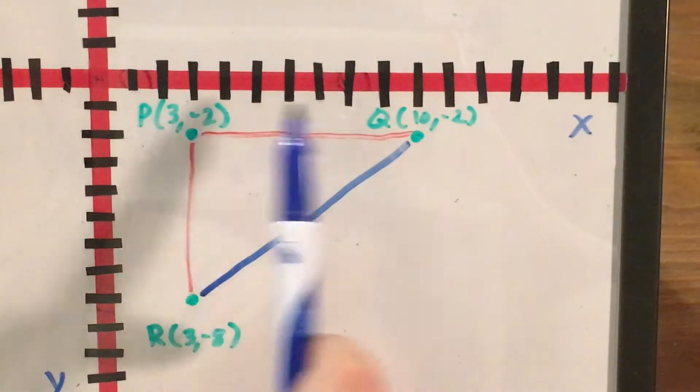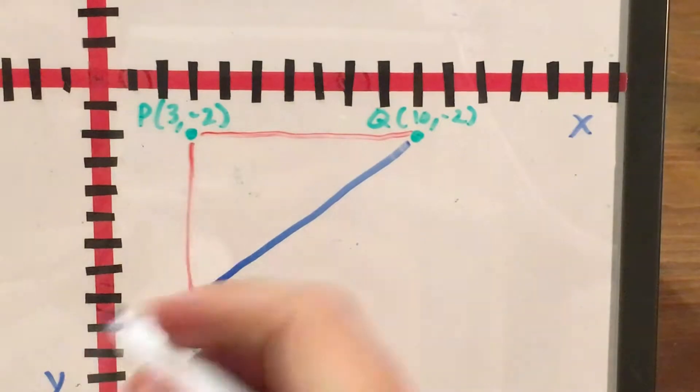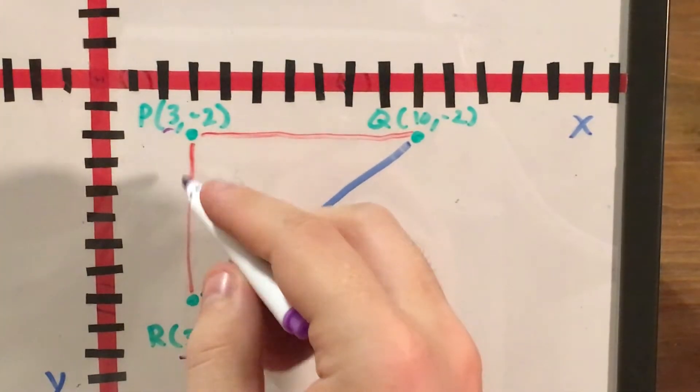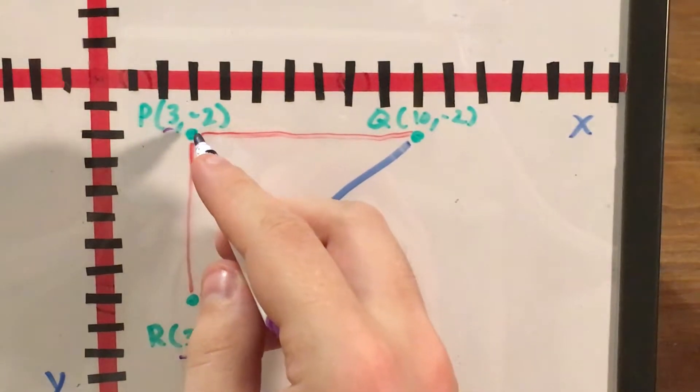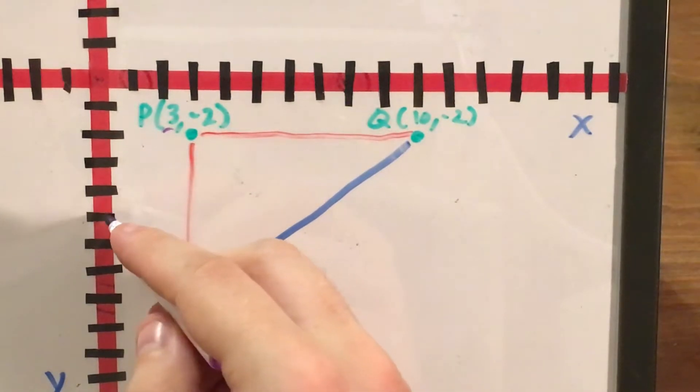So here's the triangle P, Q, and R. I put side QR in blue because that's the one we're most interested in, but I will observe that since P and R have the same Y coordinate they're just a vertical line and I can count the number of steps from negative 2 to negative 8. That's 1, 2, 3, 4, 5, 6.